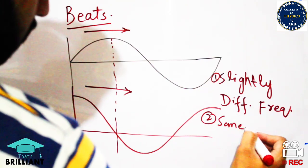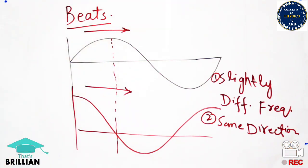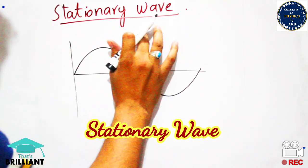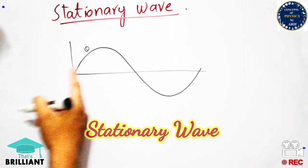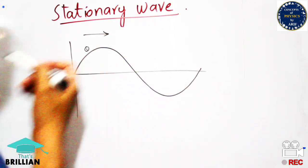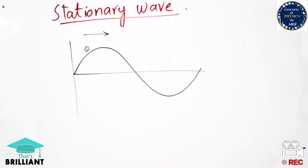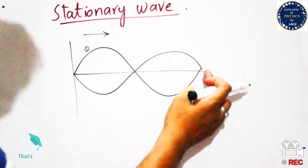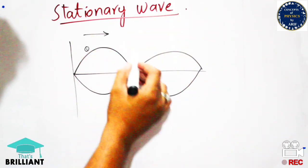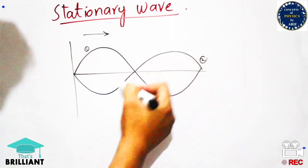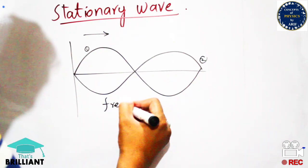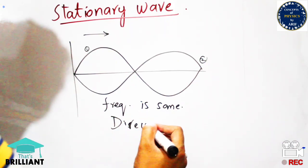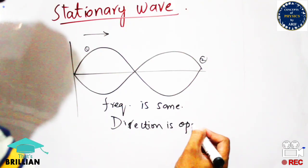I will also discuss stationary waves. A stationary wave is one in which two waves are 180 degrees out of phase with each other, traveling in opposite directions, but having the same frequency. When a sinusoidal wave and another wave of the same frequency travel in opposite directions, they produce a stationary wave having crests and troughs in fixed regions. The frequency is the same but the direction of the waves is opposite.